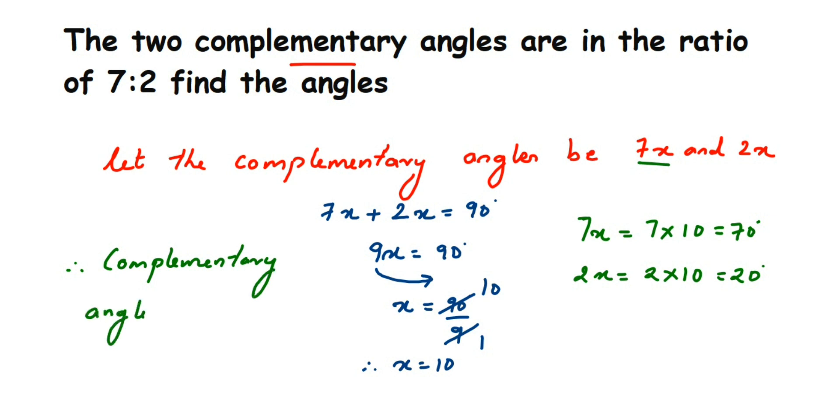So therefore complementary angles are 70 degrees and the second one is 20 degrees. If they give you a different ratio that's okay, but you have to proceed with the same method to get the answer. Now in case you have any question or doubt you can drop a comment. Thank you so much for watching.